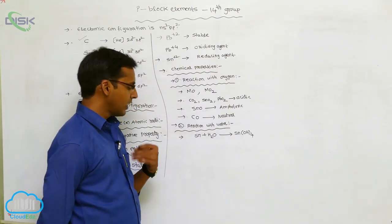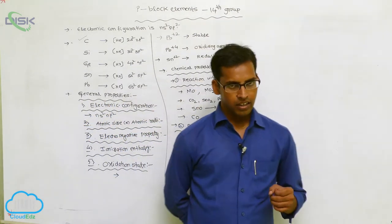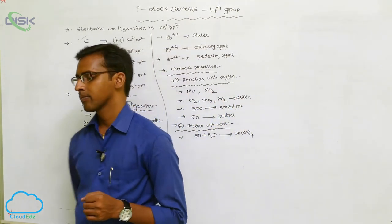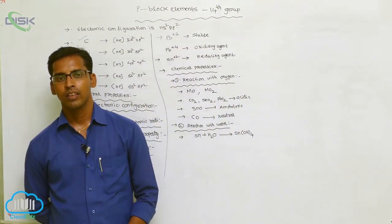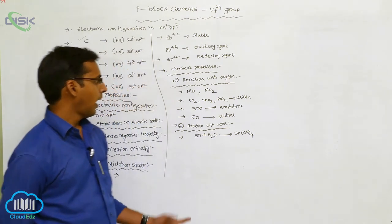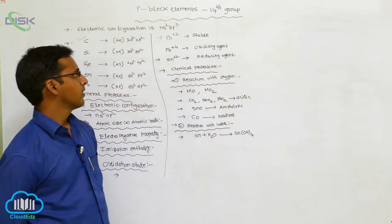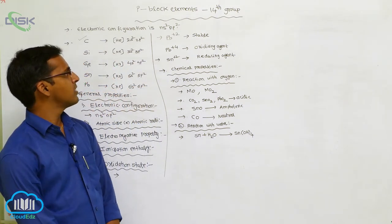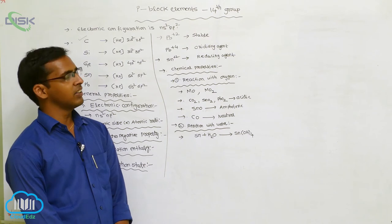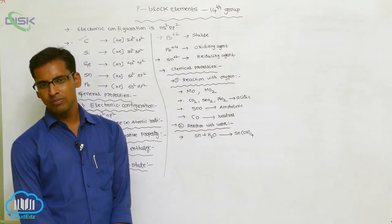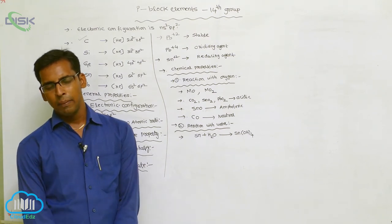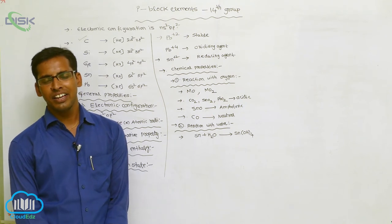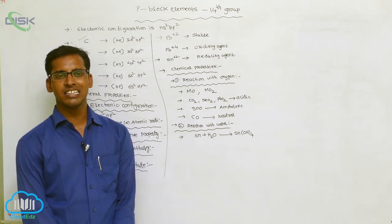Reaction with hydrogen: Group 4A elements react with hydrogen to form metallic hydrides. The stability of these metallic hydrides decreases from top to bottom in the group.